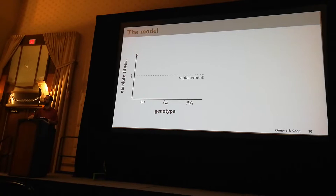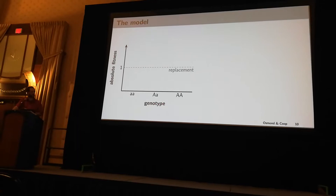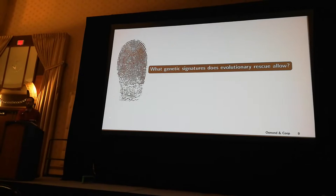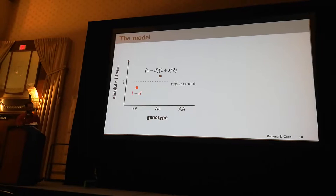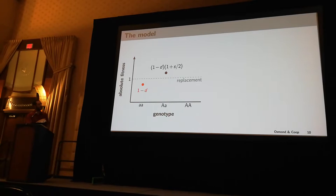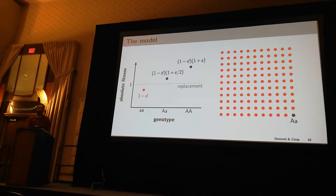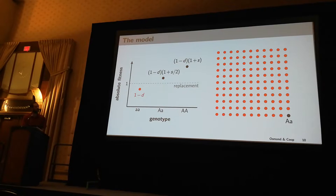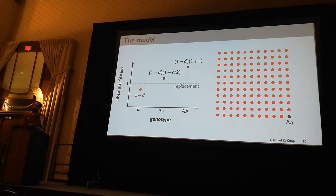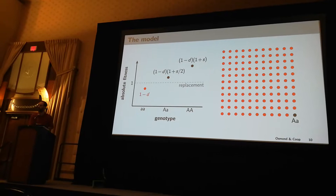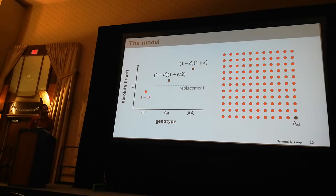To do this, we're going to build a simple one-locus, two-allele model where we assign absolute fitness to these genotypes. We're thinking of a case where we have a little-a little-a genotype that is declining at some rate b. We're then going to think of a big-A allele as conferring some selective benefit, allowing this genotype to grow at replacement. We're going to consider the additive case where big-A big-A just has twice the selective benefit. I'll only talk about the simplest scenario here where we consider a population composed primarily of little-a little-a wild type, and rare standing genetic variation — one or a handful of big-A alleles present at the onset of environmental change. So we're getting rescued from rare standing genetic variation.